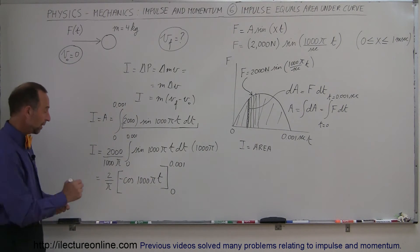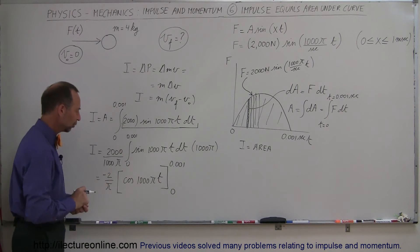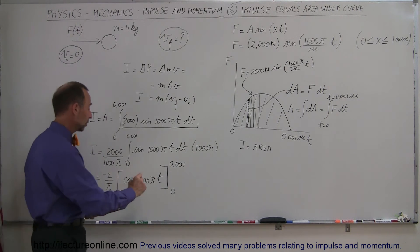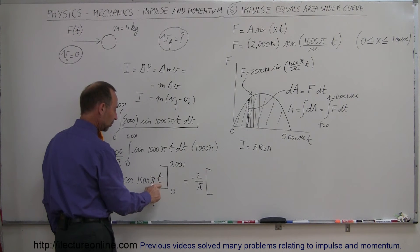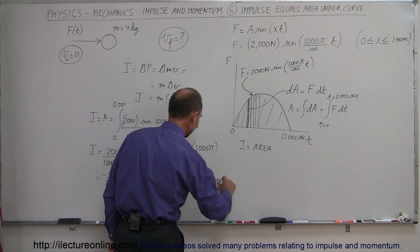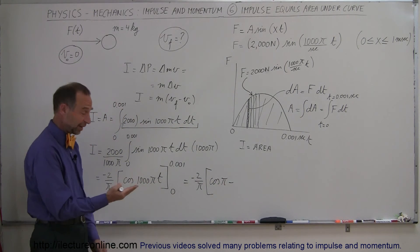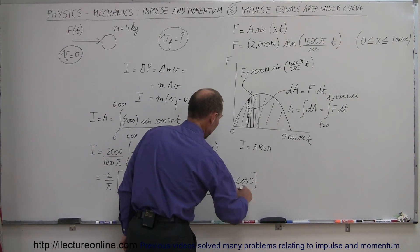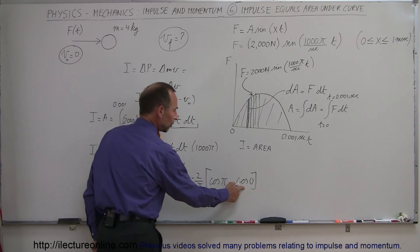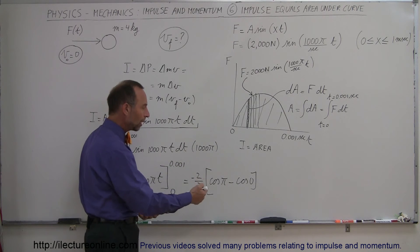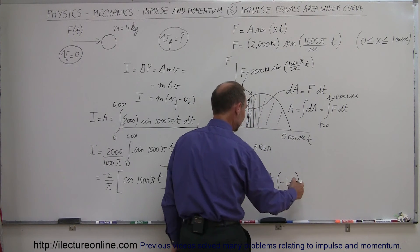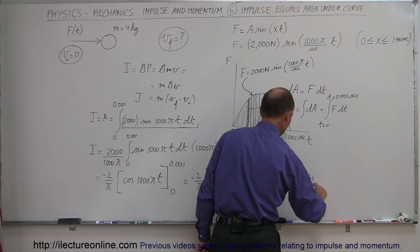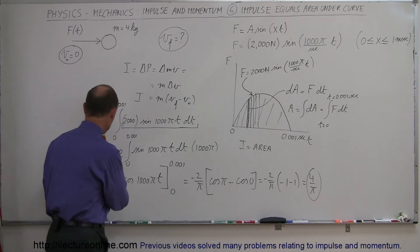Taking the negative out front and plugging in the upper limit: 0.001 times 1,000 negates the 1,000, leaving us with the cosine of pi. Minus the lower limit gives the cosine of 0. The cosine of pi is negative 1 and the cosine of 0 is 1, so we have negative 1 minus 1, which is negative 2. Negative 2 over pi times negative 2 gives positive 4 over pi. That is the impulse imparted on the object.